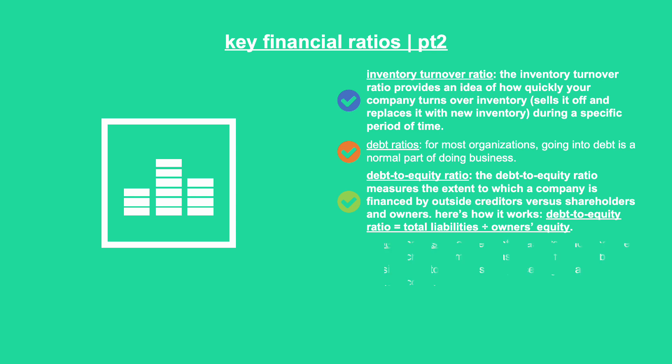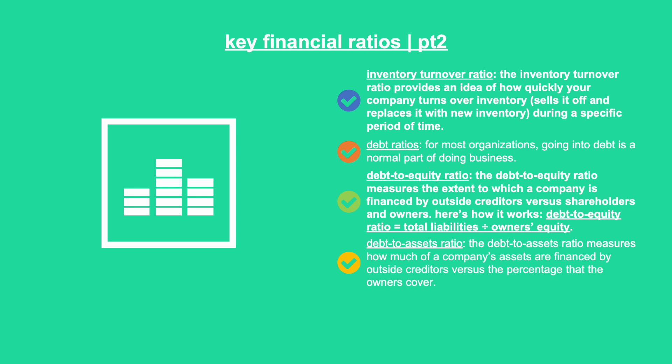Debt to assets ratio: the debt to assets ratio measures how much of a company's assets are financed by outside creditors versus the percentage that the owners cover. You divide the long-term liabilities by your total assets. Debt to assets ratio equals long-term liabilities divided by total assets. Ratios of up to 0.50 are considered acceptable; anything more may be a sign of trouble. Note, however, that most manufacturing firms have debt-to-asset ratios between 0.30 and 0.70.